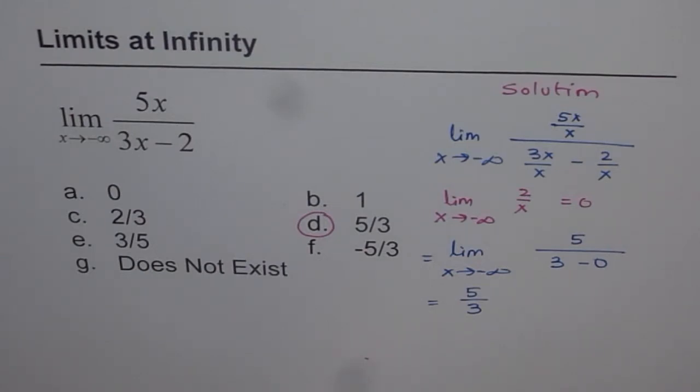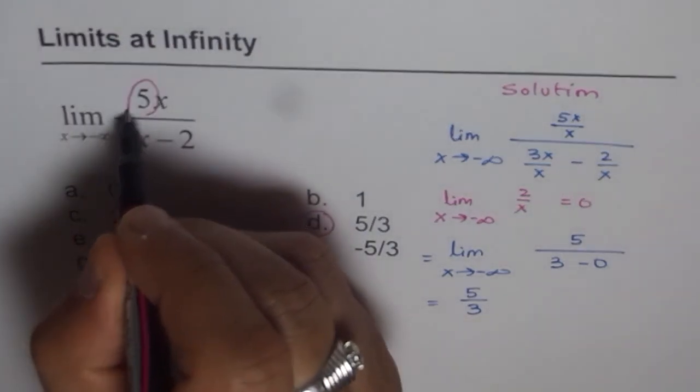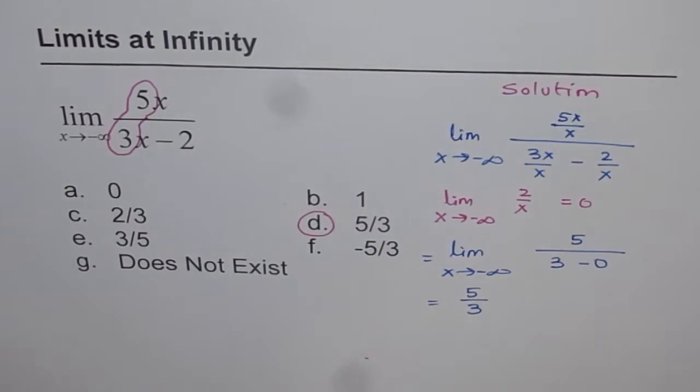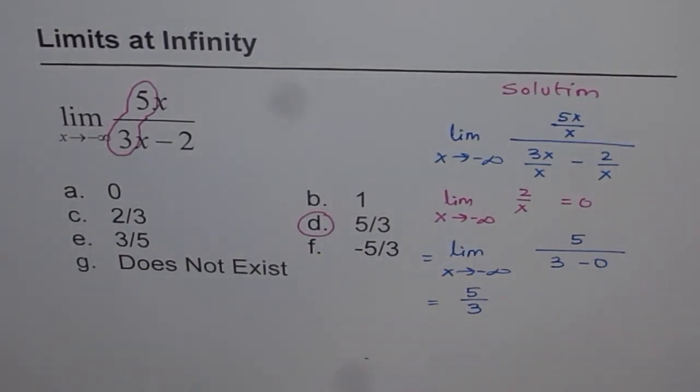In that case, the limit of the function as x approaches positive or negative infinity is the ratio of their leading coefficients in numerator and denominator. So the answer will be 5 over 3. That is the answer for this type of question.